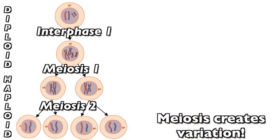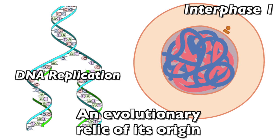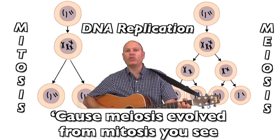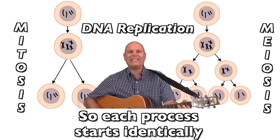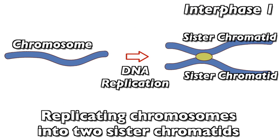In interphase one, meiosis starts — it's the DNA replication part, an evolutionary relic of its origin. Meiosis evolved from mitosis, you see, so each process starts identically, replicating chromosomes into two sister chromatids.